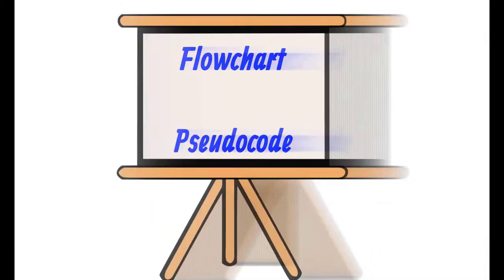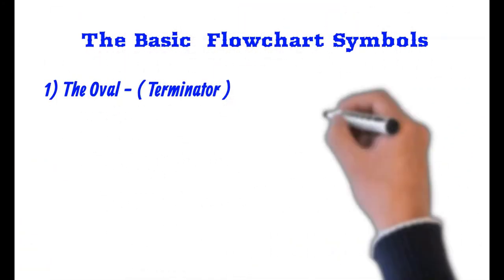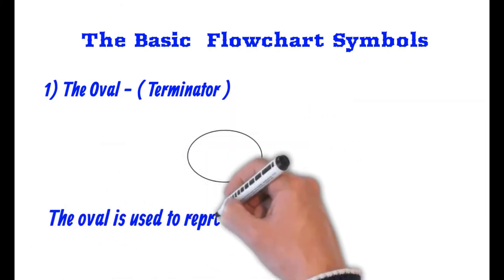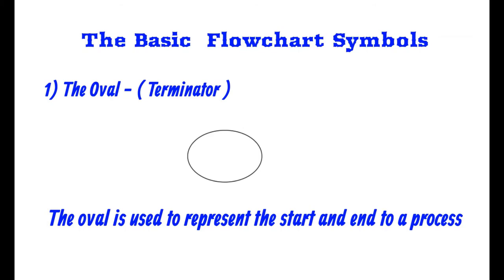There's some basic symbols that we're going to discuss in this video, so we'll go over those real quickly. The first is the oval. Oval is also known as a terminator. So the oval is used to represent the start and end to a process.